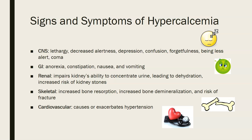For the central nervous system, we have lethargy, decreased alertness, depression, confusion, forgetfulness — being less alert and less oriented — and also coma. For GI symptoms, it would be anorexia, so lack of appetite, constipation, nausea, and vomiting.